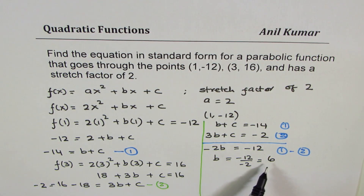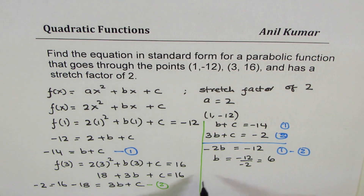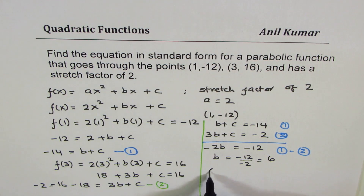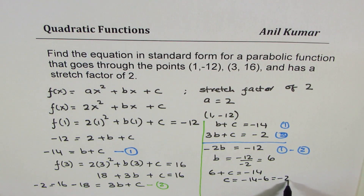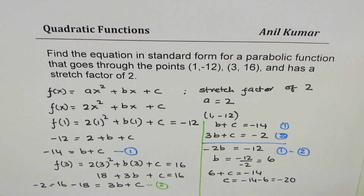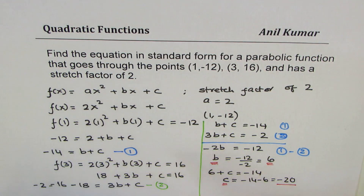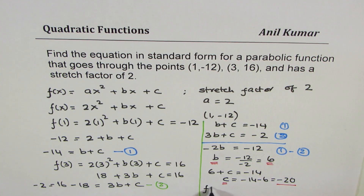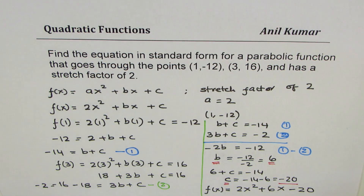We get the value of b as 6. We can now find c by substituting b = 6 into Equation 1. Since b + c = -14, we write 6 + c = -14, so c = -14 - 6, which is -20. With b = 6 and c = -20, we can write down our parabolic function as f(x) = 2x² + 6x - 20. That is the solution to the given question.